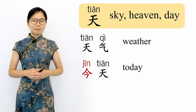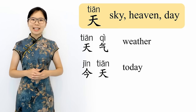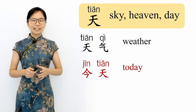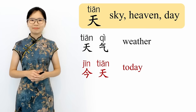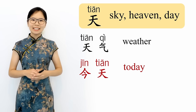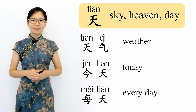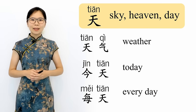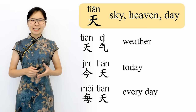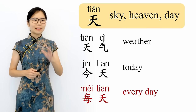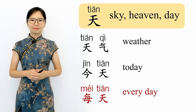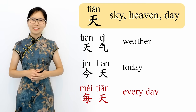The next word uses 天 with the meaning of day. 今天 means this day — in other words, today. 今天, today. And 每天 means every day. 每天, every day.